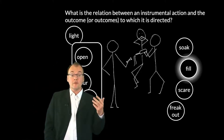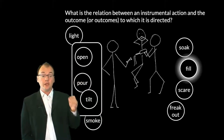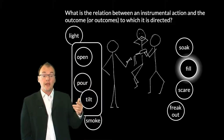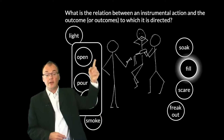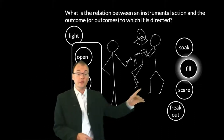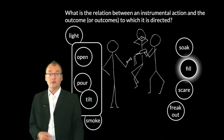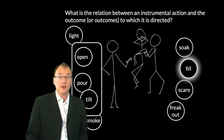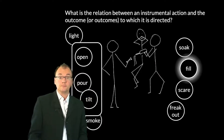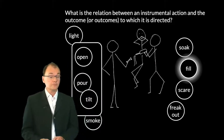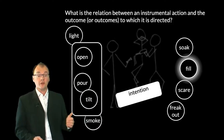So now we can ask a fundamental question about instrumental action: what's the relation between an instrumental action and the outcome or outcomes to which it's directed? In this case, what is it that relates the actions I perform — the opening, pouring, tilting — to the filling, as opposed to soaking Zach's trousers? What makes it the case that my action is directed to that outcome and not any other? Here's a very standard idea: it's intention that provides for that relation.